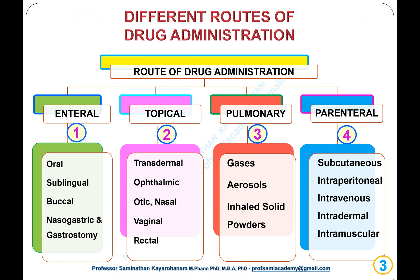Different Routes of Drug Administration. Routes of drug administration may be classified into 4 types: (1) enteral route — for example, oral, sublingual, buccal, nasal, gastric, and gastrostomy.